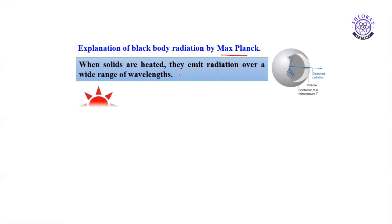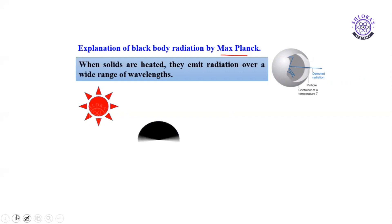When solids are heated, they emit radiation over a wide range of wavelengths. Take iron as an example: when I heat iron to some temperature, it absorbs energy and then starts to emit radiation across a wide range of wavelengths. This is called black body radiation. A black body is one which can absorb all radiations and can emit all types of radiations.